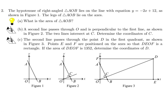The hypotenuse of right-angled triangle AOB lies on the line y = −2x + 12, as shown in figure 1. The legs lie on the axes. To find the area, we first find the intercepts. When x = 0, y = 12. When y = 0, solving gives x = 6. The triangle has area = ½ × base × height = ½ × 6 × 12 = 36.